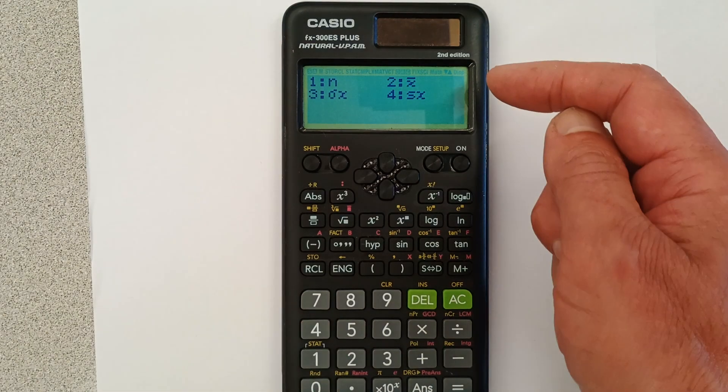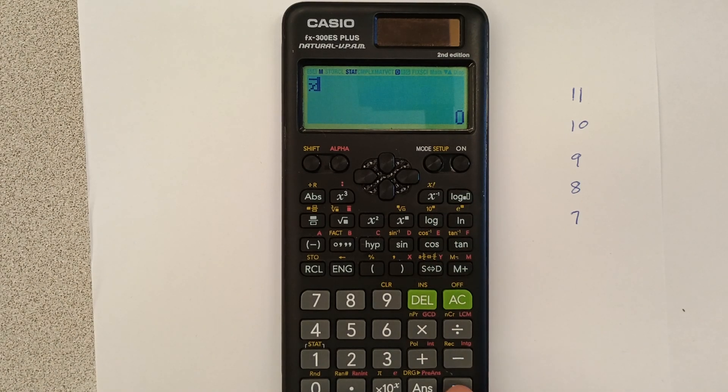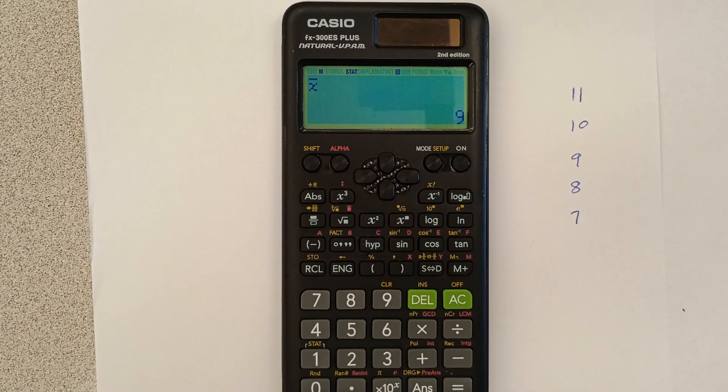And if we want to know our mean, we're going to click number two. Notice that there's a zero. You're going to have to hit equals. And now our average is nine. All right.